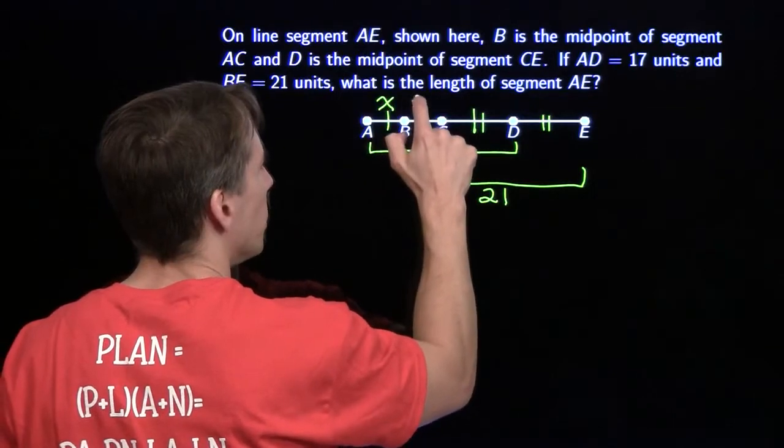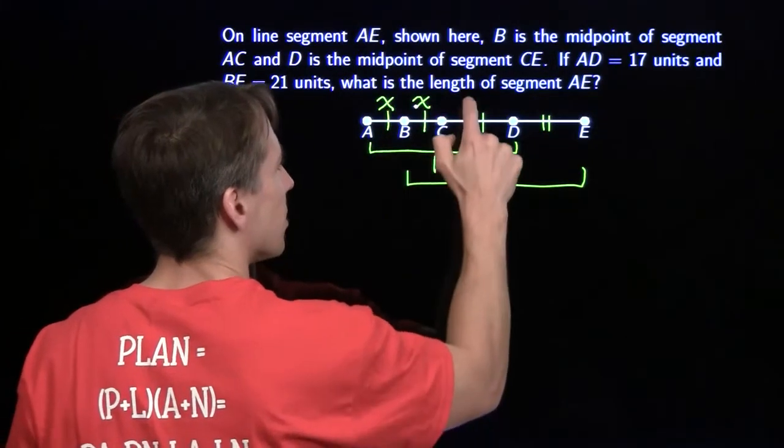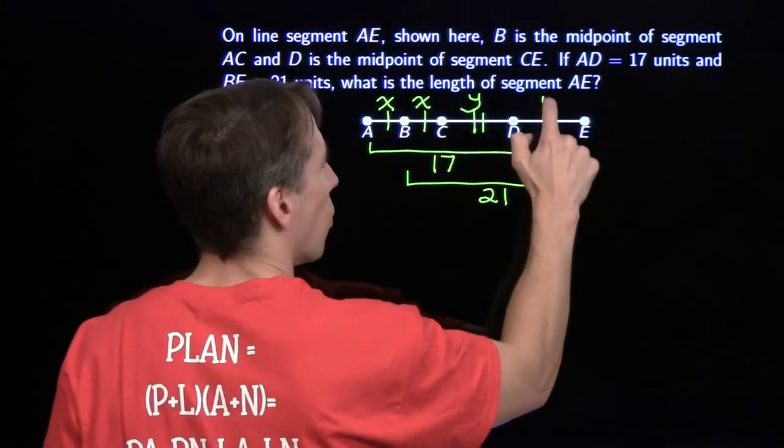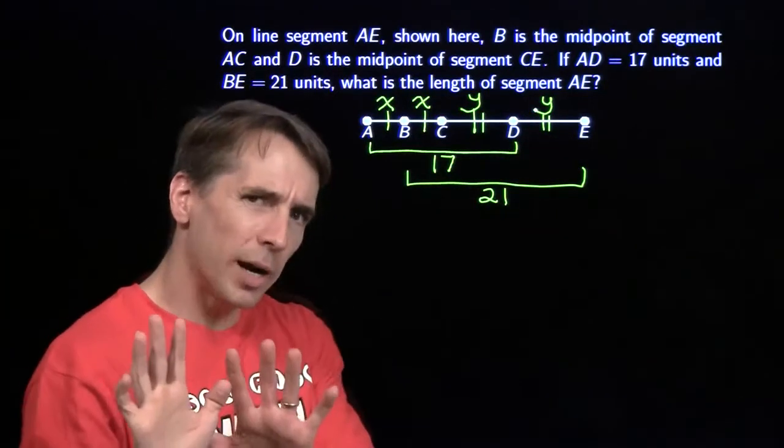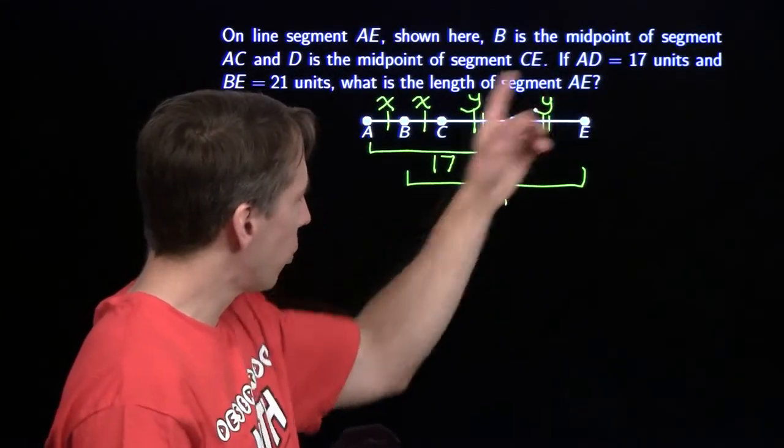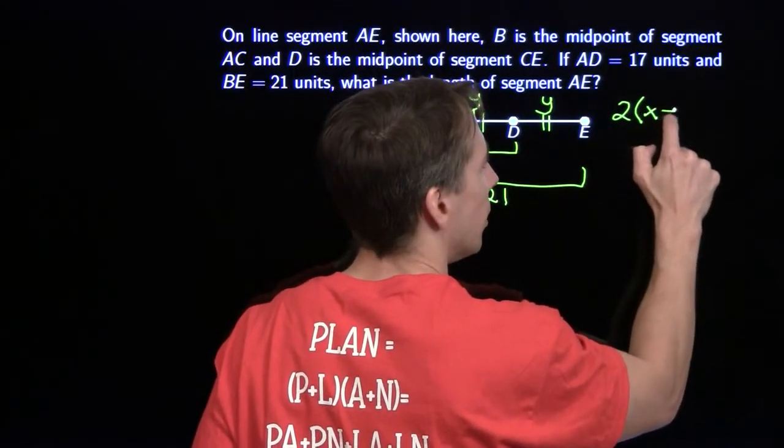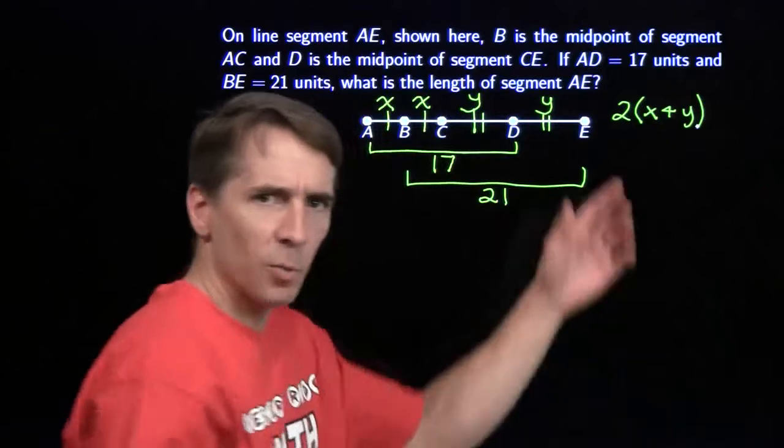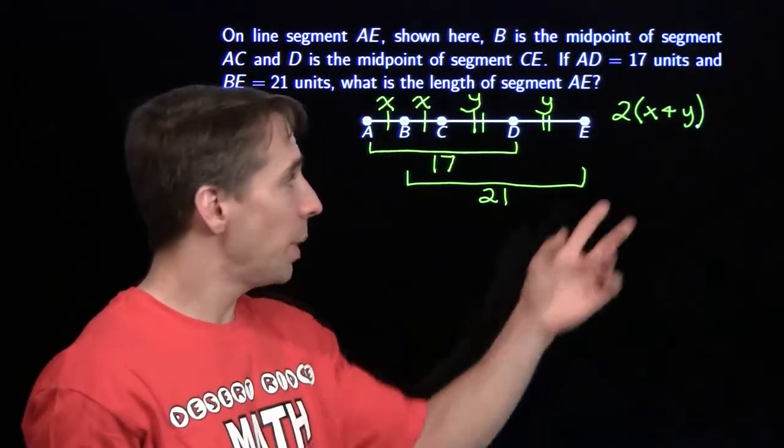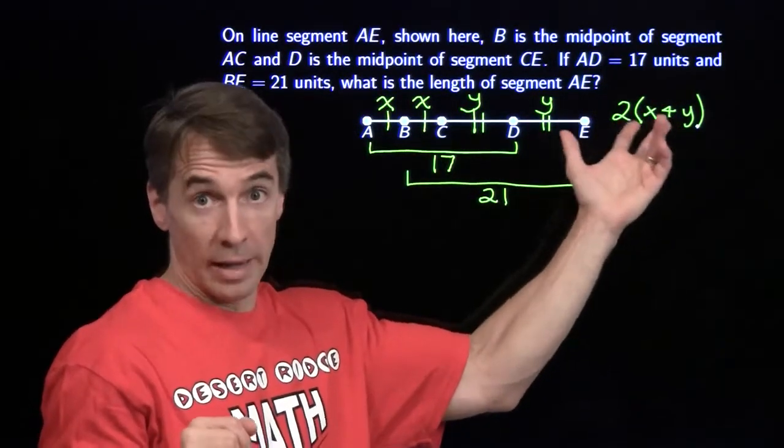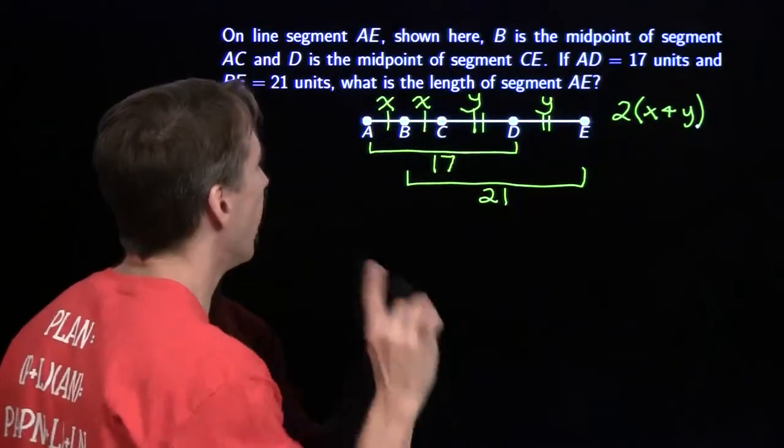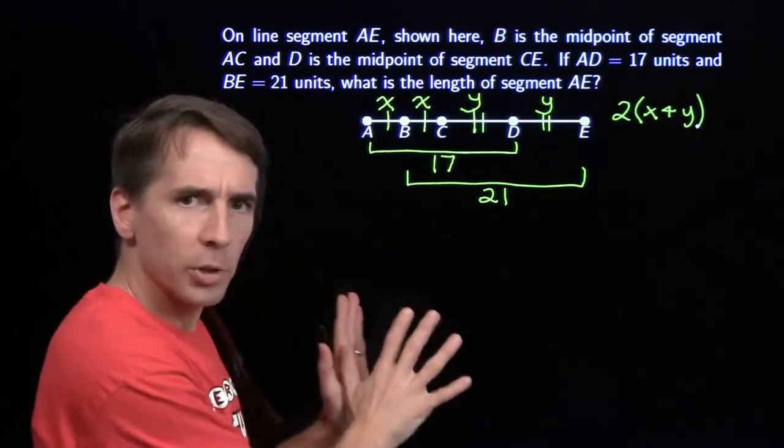I'm going to call these two equal pieces x, each of these over here is y. We're going to write down what we're looking for. AE is 2 times the sum x plus y. So if I can find x and y, I can solve the problem. Or even better, if I can find the sum of x plus y, I don't even have to find x and y.